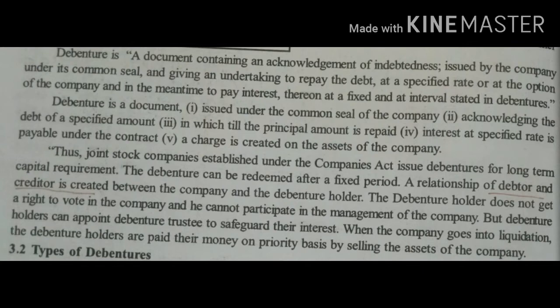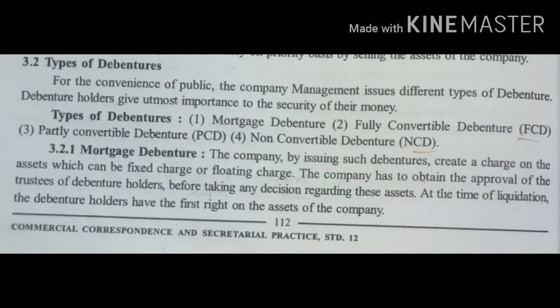The types of debenture are: mortgage debenture, fully convertible debenture (FCD), partly convertible debenture (PCD), and non-convertible debenture (NCD). When a company issues mortgage debenture, it creates a charge on the assets of the company. This charge can be fixed or floating.